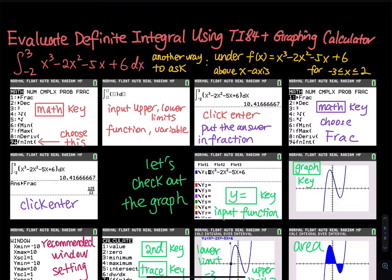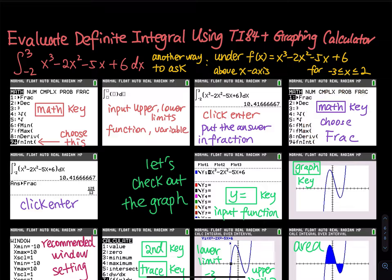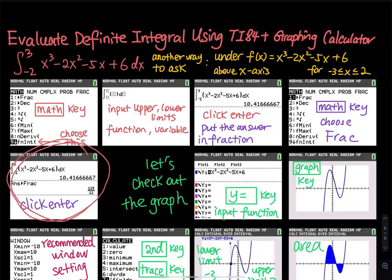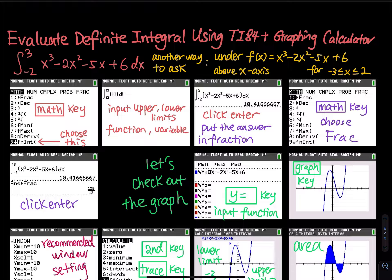To put that in fraction form, you hit the math key again and then select the first one, FRAC. That means you are asking the calculator to put this decimal into a fraction. So once you click that, it brings you to this screenshot. You see ANS then FRAC, meaning the answer is put in fraction form. The fraction is 125 over 12.